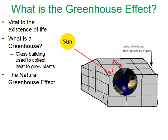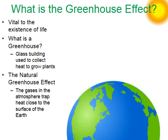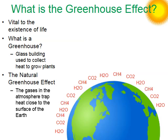Now let's talk about the greenhouse effect. Is there a glass building that surrounds planet Earth? Of course not, but Earth has an atmosphere that surrounds it that acts like a greenhouse. The gases in Earth's atmosphere trap heat to warm the Earth — greenhouse gases such as carbon dioxide, water vapor, and methane. They trap heat.